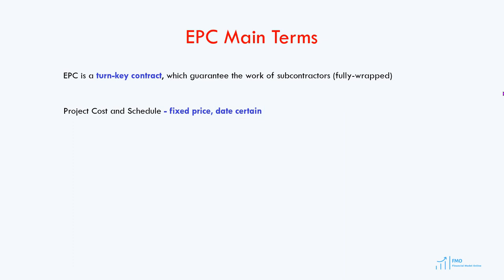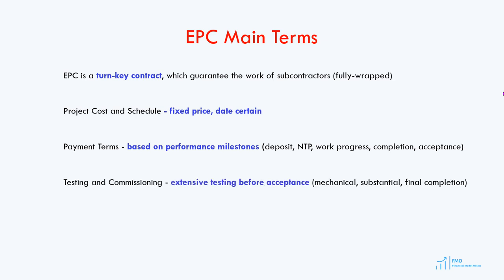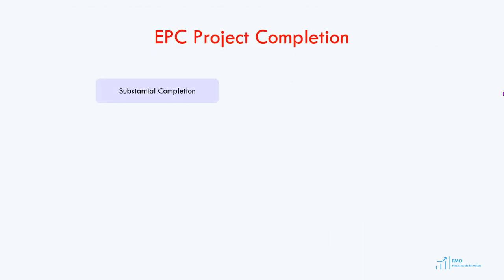When it comes to payment terms, payment to the EPC firm is typically made in accordance with performance milestones. The first payment is made when the notice to proceed is issued to the EPC firm, followed by smaller payments as the EPC makes progress, and the final payment is made when the project is accepted by the sponsor. Since EPC is a turnkey contract, there will be extensive testing before the sponsor can accept the project. The contract will include minimum and guaranteed performance levels, and the project can reach substantial completion if it achieves the minimum performance level. The project is typically ready to operate at substantial completion.